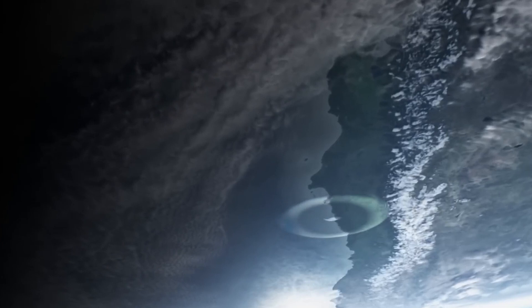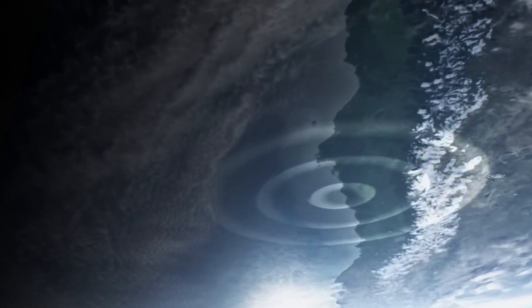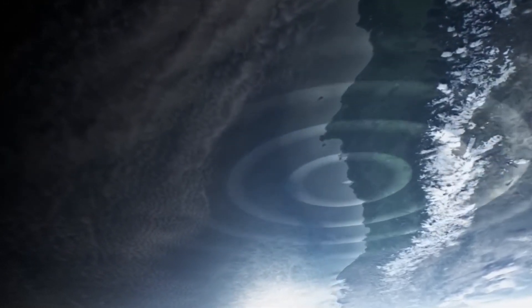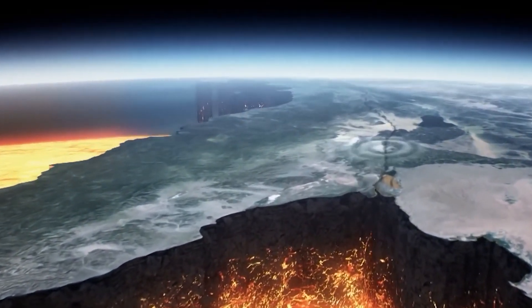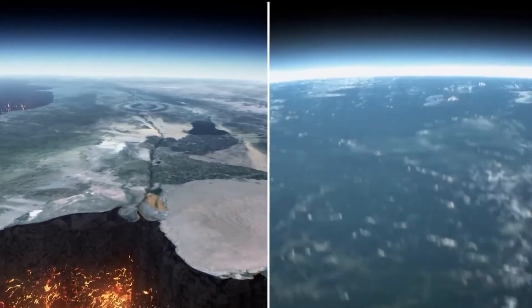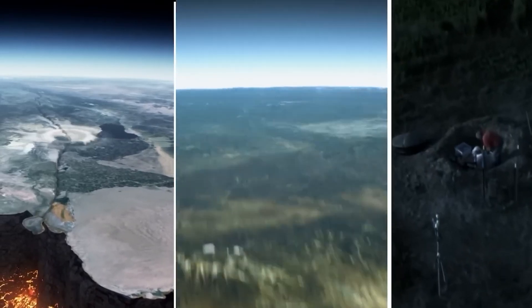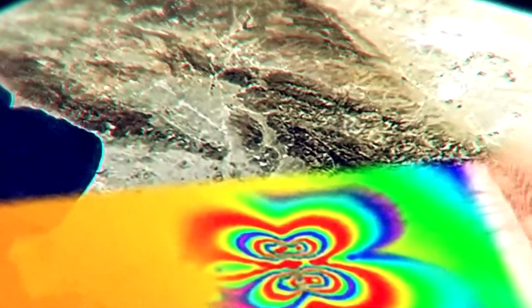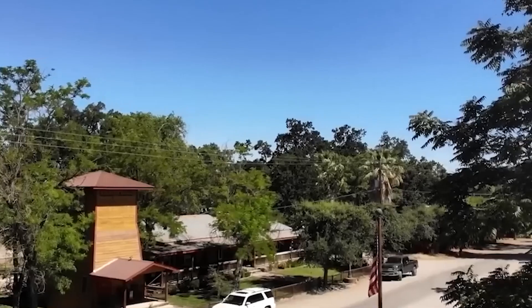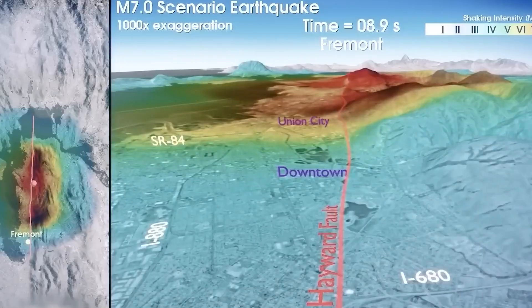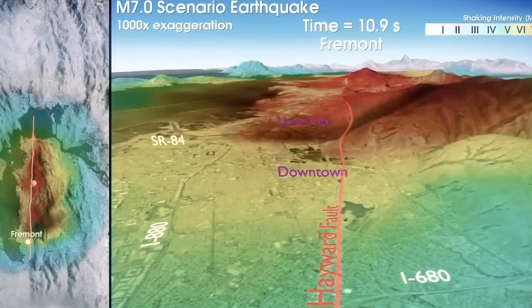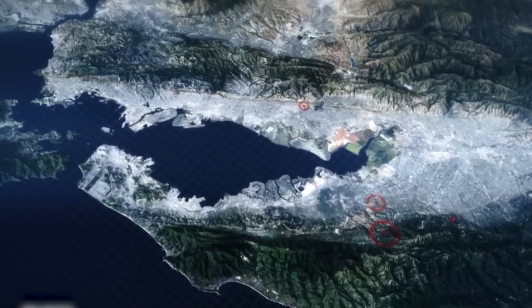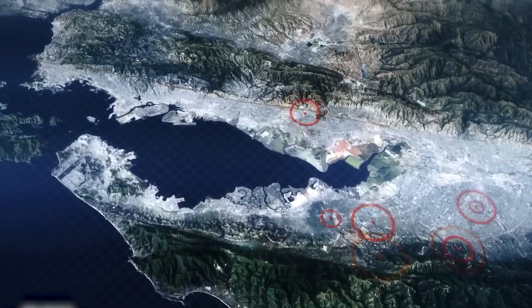Yet it is not possible to determine with absolute certainty when an earthquake will occur. This was demonstrated when the earthquake that followed the one in 1966 occurred all the way in 2004. Earthquakes take place when a sufficient amount of stress builds up and is subsequently released all at once. Although it is possible to make educated guesses about the overall behavior of such a system, it is not possible to pinpoint the precise moment at which an earthquake would take place.